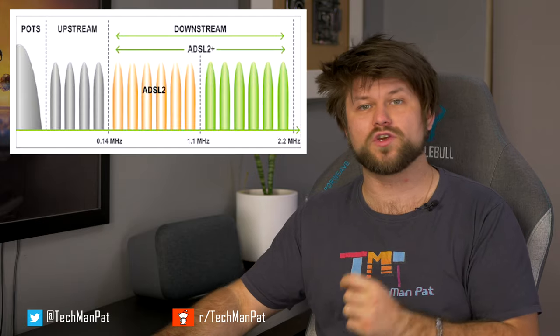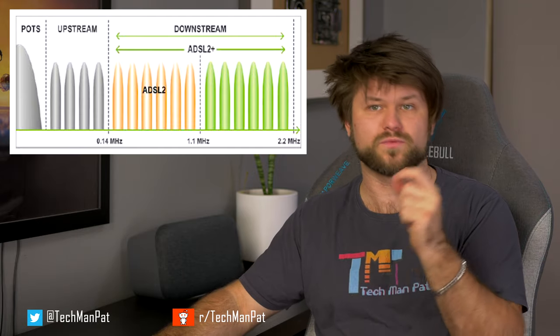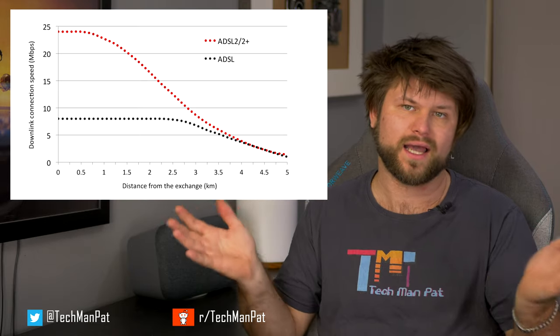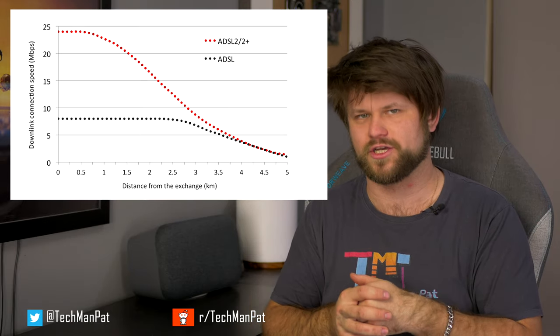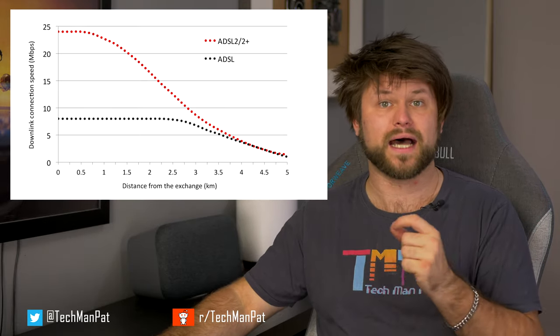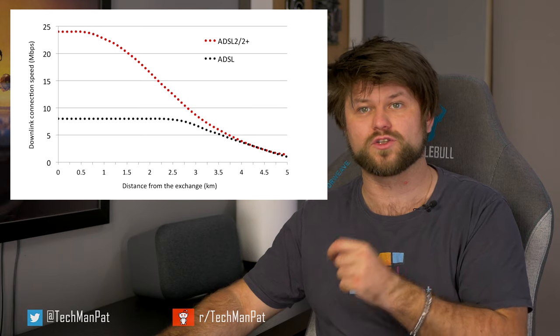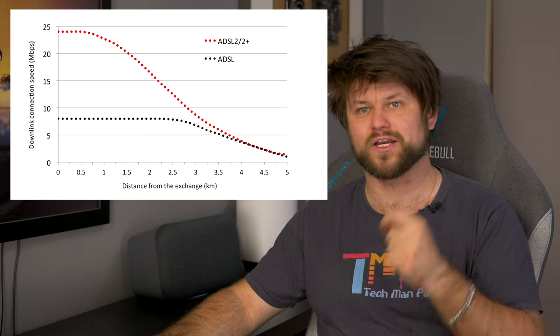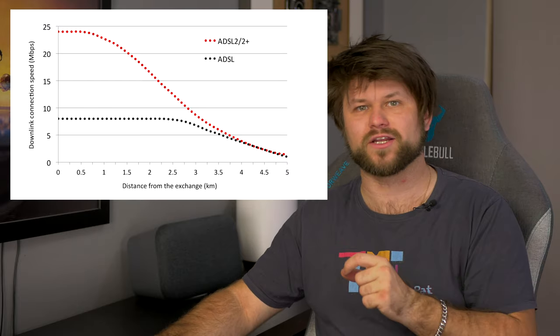The bit rate of consumer DSL services typically ranges from 256 kilobits to over 100 megabits in the direction to the customer, aka downstream, depending on DSL technology, line condition and service level implementation. In ADSL, the data throughput in the upstream direction to the service provider is much lower, hence the designation of asymmetrical services. In symmetrical digital subscriber lines, aka SDSL services, the downstream and upstream data rates are equal.